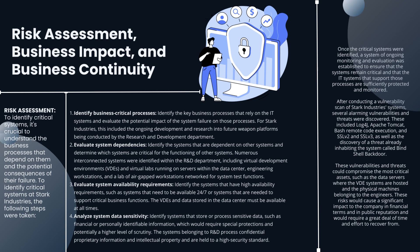Once the critical systems were identified, a system of ongoing monitoring and evaluation was established to ensure that those systems remain critical and that the IT systems supporting those processes are sufficiently protected and monitored. After conducting a vulnerability scan of Stark Industries' systems, several alarming vulnerabilities and threats were discovered, including Log4J, Apache Tomcat vulnerabilities, Bash remote code execution, issues with SSL v2 and v3, and the discovery of a threat already inhabiting the system called a bind shell backdoor. These vulnerabilities could compromise the most critical assets, such as the data servers hosting VDE systems and physical machines belonging to engineers, causing significant financial and reputational impact.